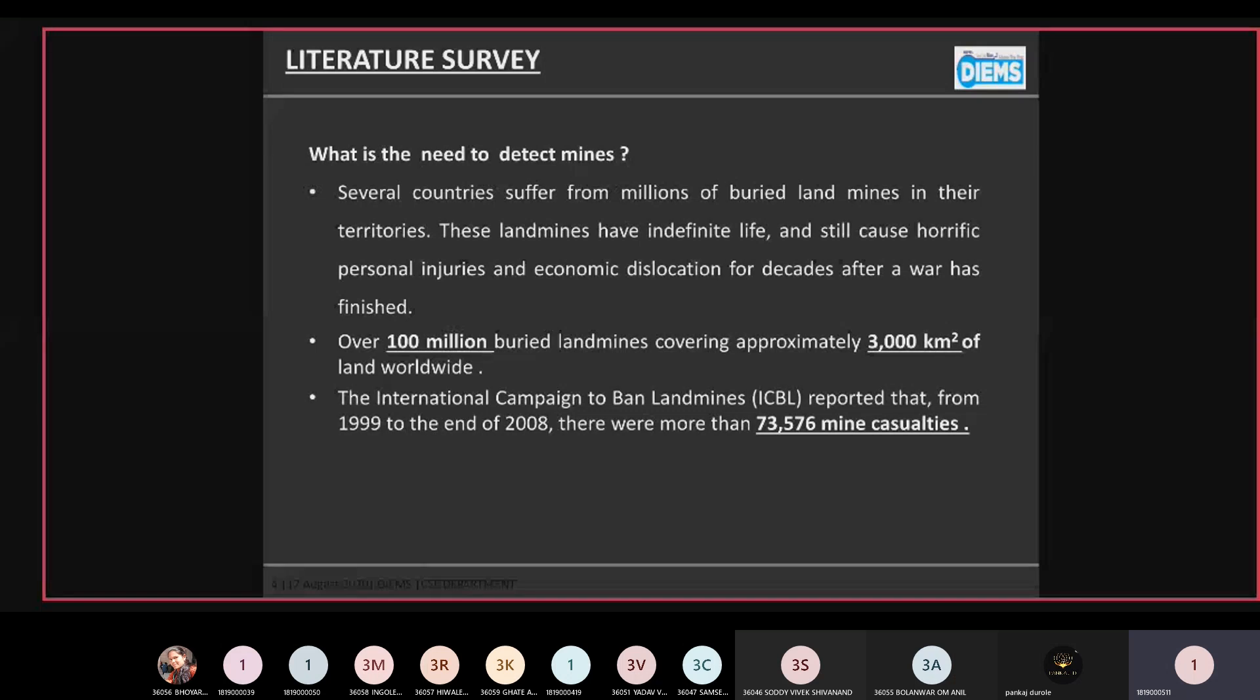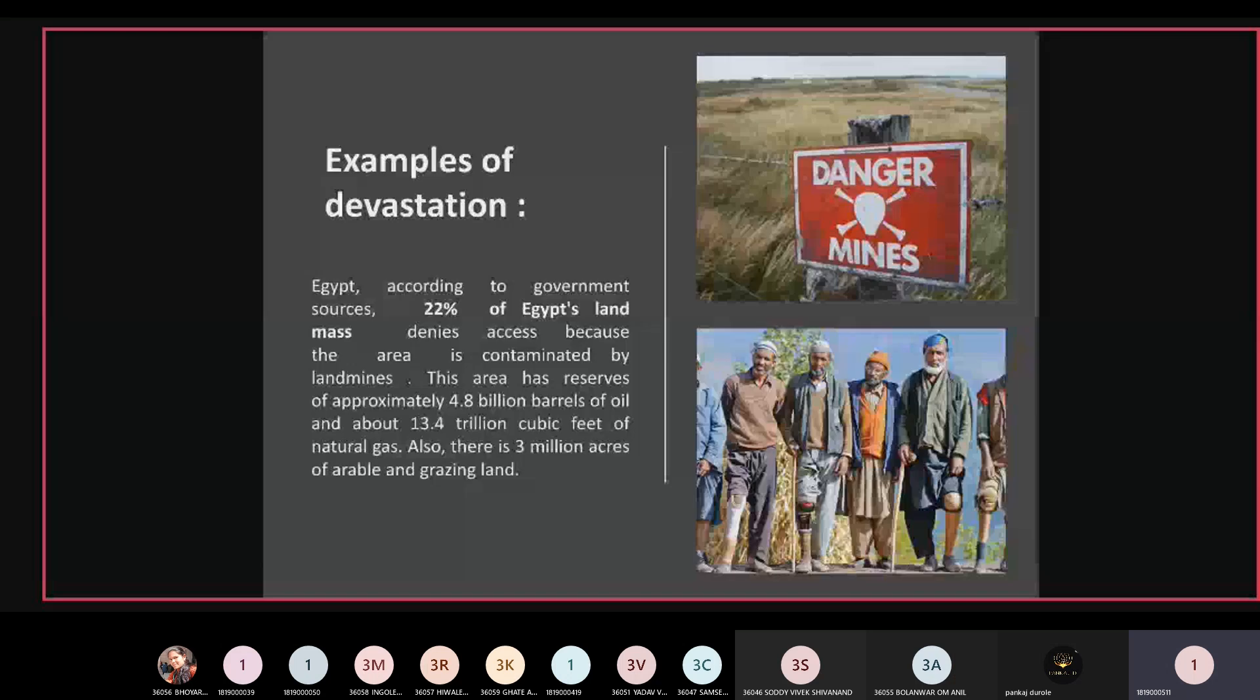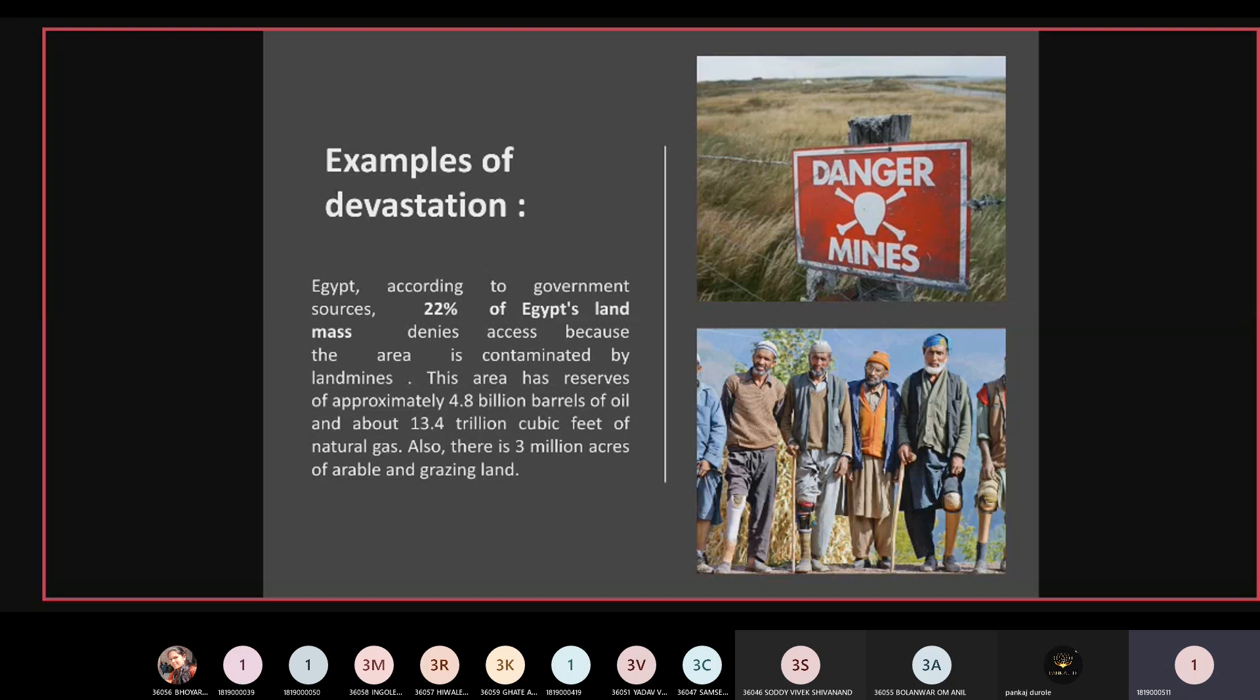The example of devastation: Egypt. According to sources, 22% of Egypt's landmass is access denied because the area has been contaminated with landmines. These areas are assumed to contain approximately 4.8 billion barrels of oil and about 13.4 trillion cubic feet of natural gases, and also 3 million hectares of arable and grazing lands.